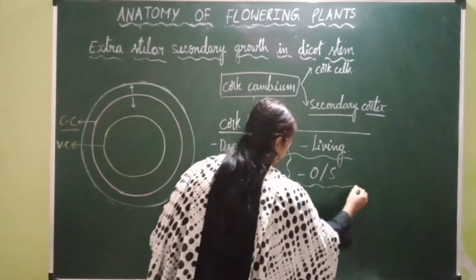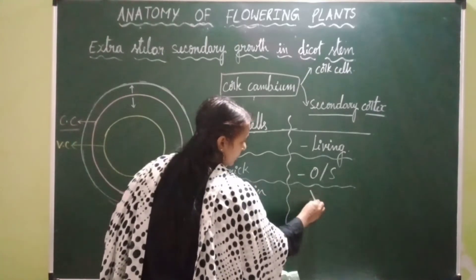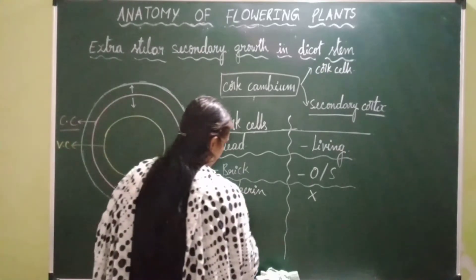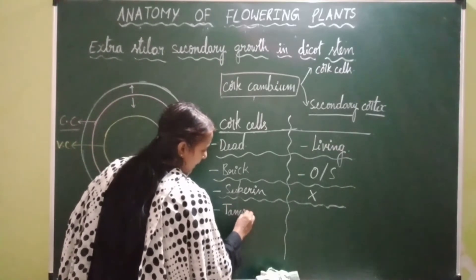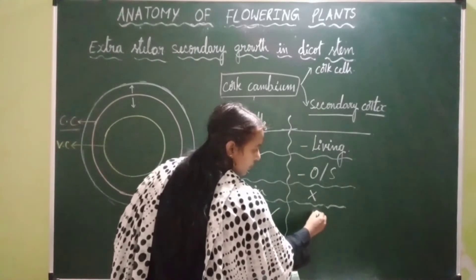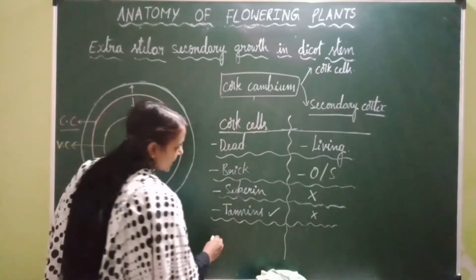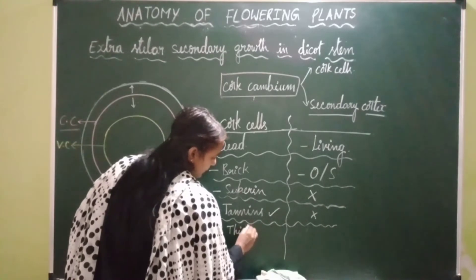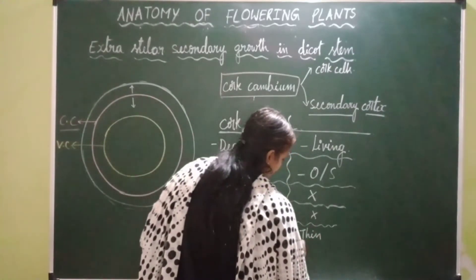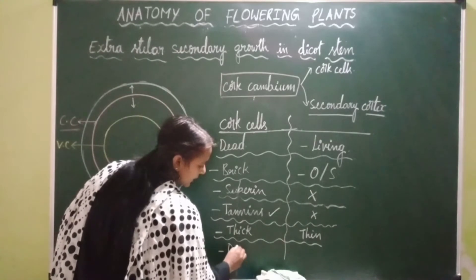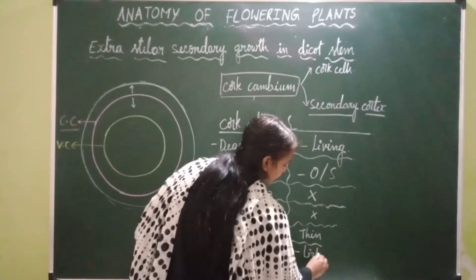Cork cells have suberine depositions, whereas suberine depositions are absent in cells of secondary cortex. There is accumulation of tannins in cork cells, but no accumulation of tannins in secondary cortical cells. Cork cells are thick-walled, whereas cells of secondary cortex are thin-walled. Cork cells appear dark in color, whereas cells of secondary cortex appear lighter in color.